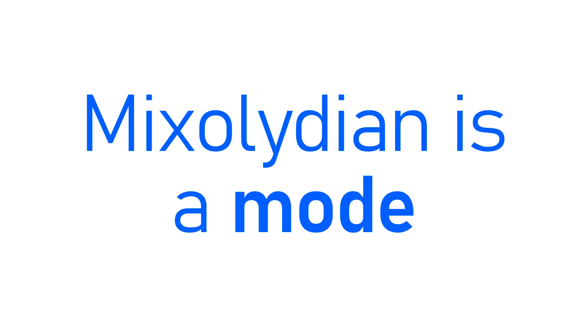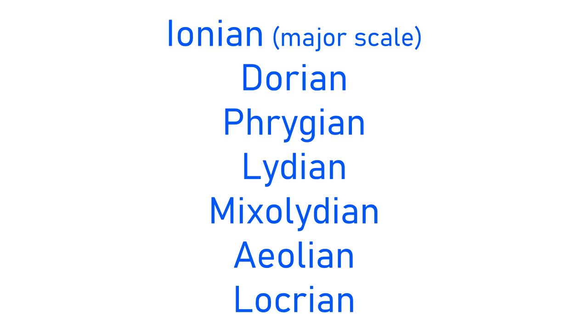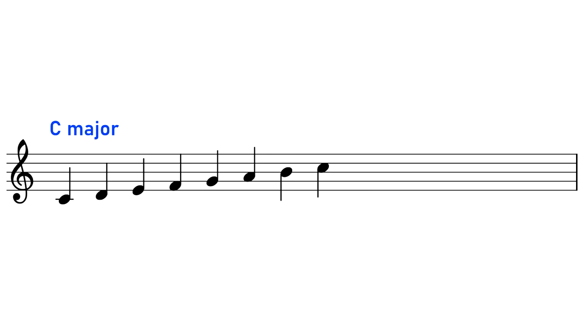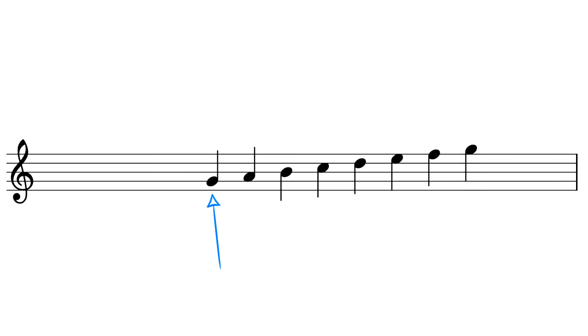Now, of course, Mixolydian isn't just a scale, it's also a mode, a mode of the major scale. A mode is when you take a scale, like the major scale, but then treat a different note as the tonic note, as the centre of gravity. Mixolydian is the 5th mode of the major scale. So if we take C major for example, but treat the 5th degree, G, as the tonic note, as the root of the scale, then we get G Mixolydian.